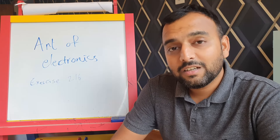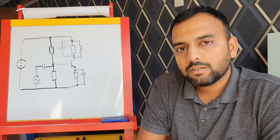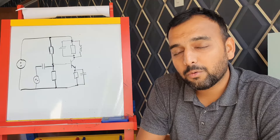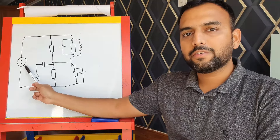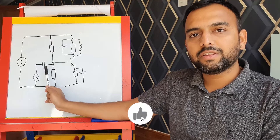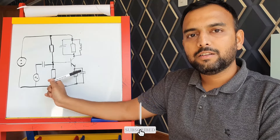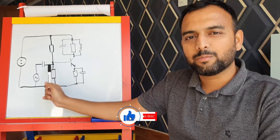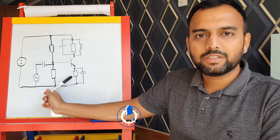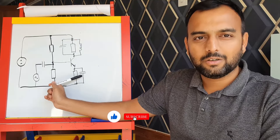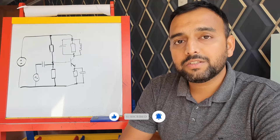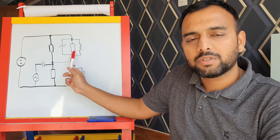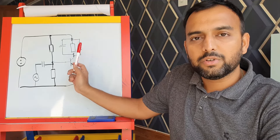I've got a whiteboard to show you all the calculations. On the board you can see the circuit we need to design — all the component values have not been calculated yet. We have a 15 volt power supply, an AC coupled input with a capacitor and two resistors. We've been given some component values: the supply is 15 volts, the resistor is 6.2 kilohms, and the inductor is 1 millihenry.